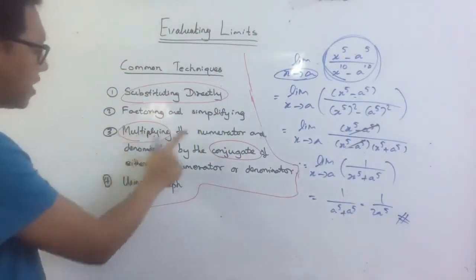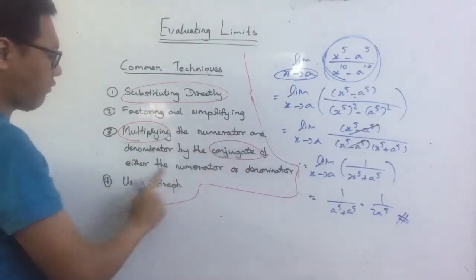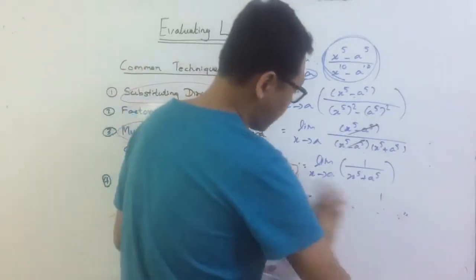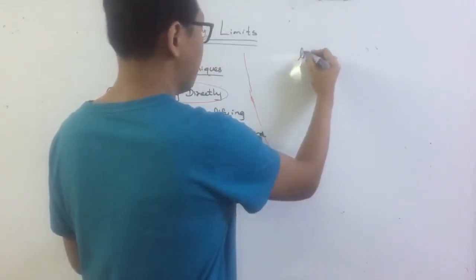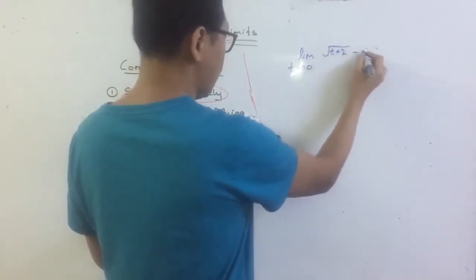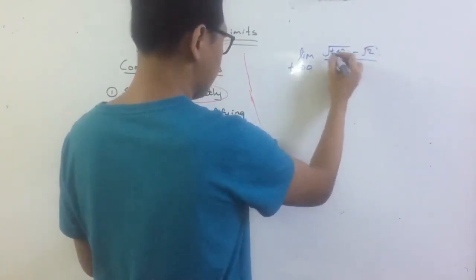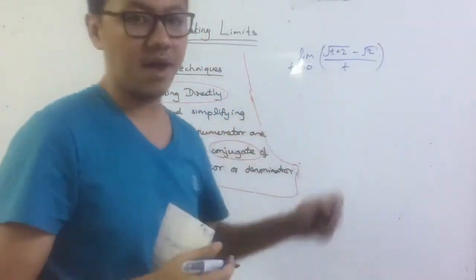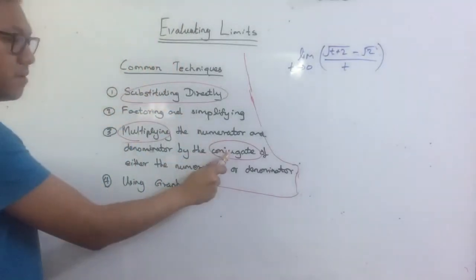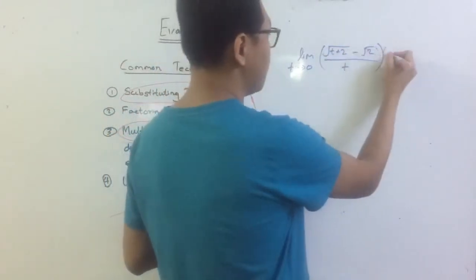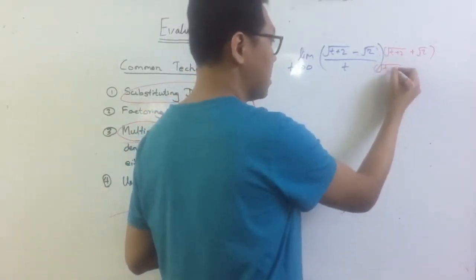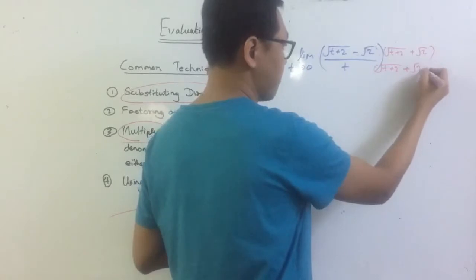The third method is multiplying the numerator and denominator by the conjugate of either the numerator or denominator. Let me show you an example: limit as t approaches 0 of (square root of t plus 2 minus square root of 2) over t. You can't substitute 0 here, and you can't factorize this either, so I'm going to multiply by the conjugate. The conjugate of the numerator will be square root of t plus 2 plus square root of 2, and multiply the denominator by the same.